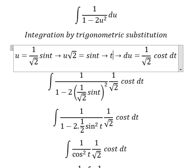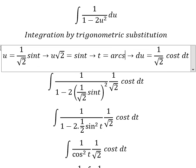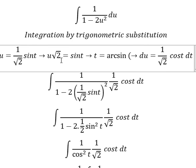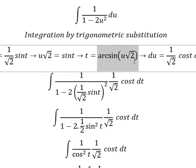And we have t equals arcsin of u multiplied by the square root of 2. So we put this one to replace for t.